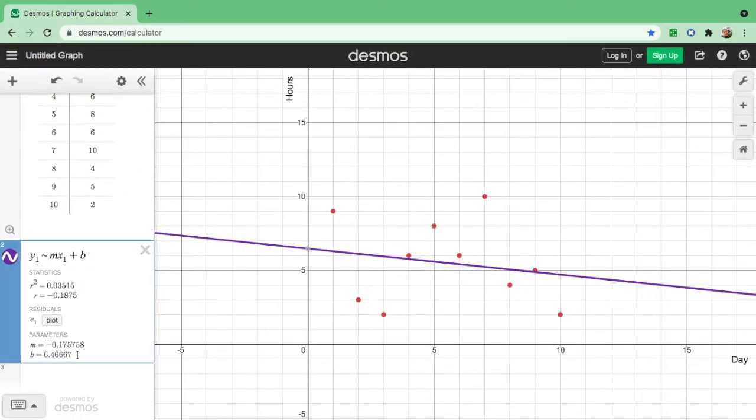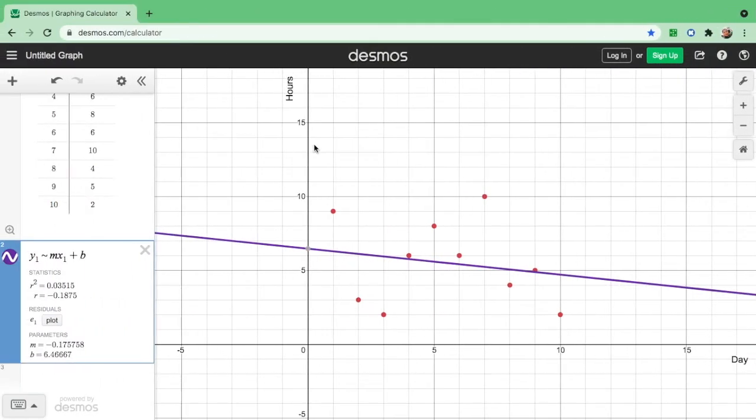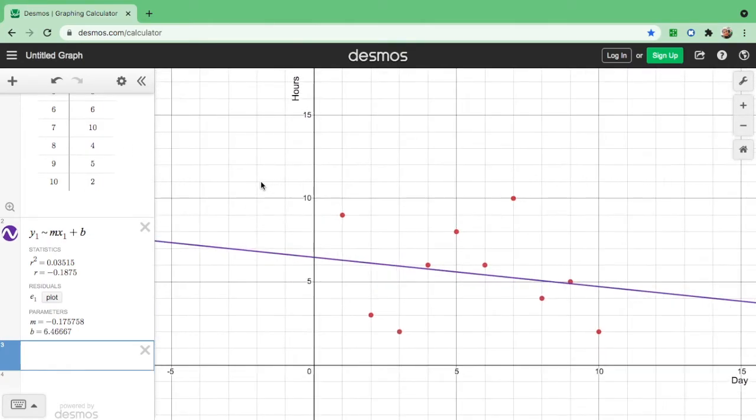So this is how we find the slope, the y-intercept, and the equation of a line of best fit for the given data, and how to draw a line as well. Now, if you're asked to find for the correlation, we say that there's no correlation at all or zero correlation. So how do you do that?